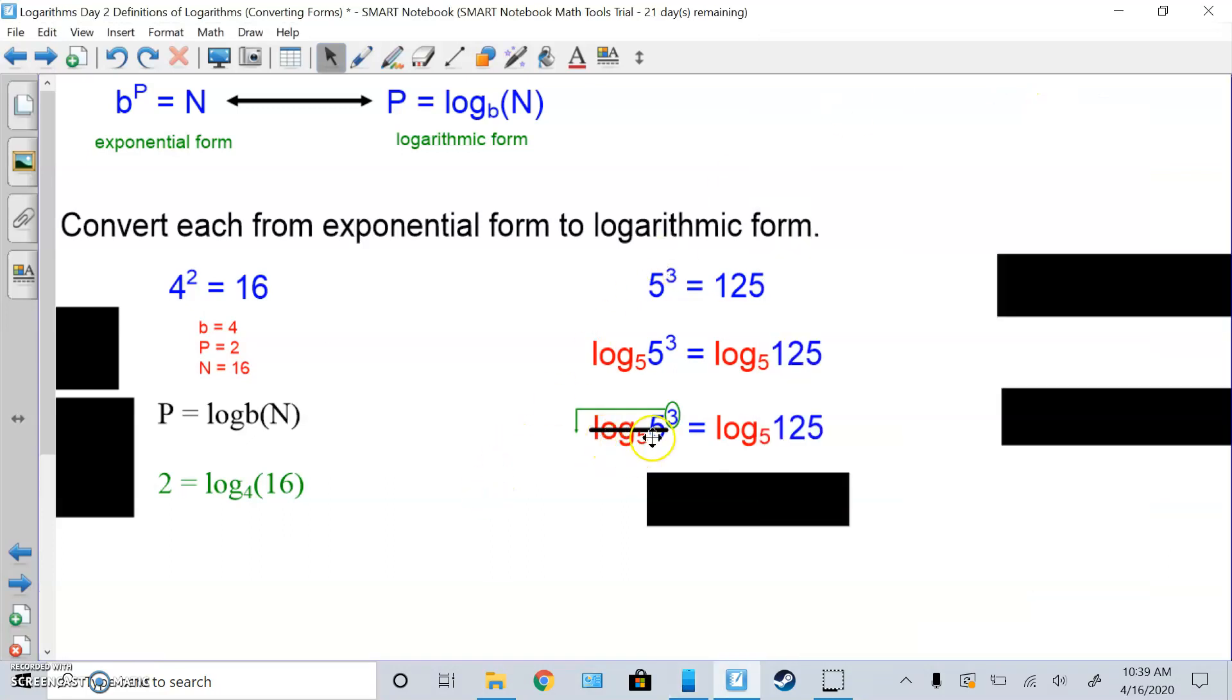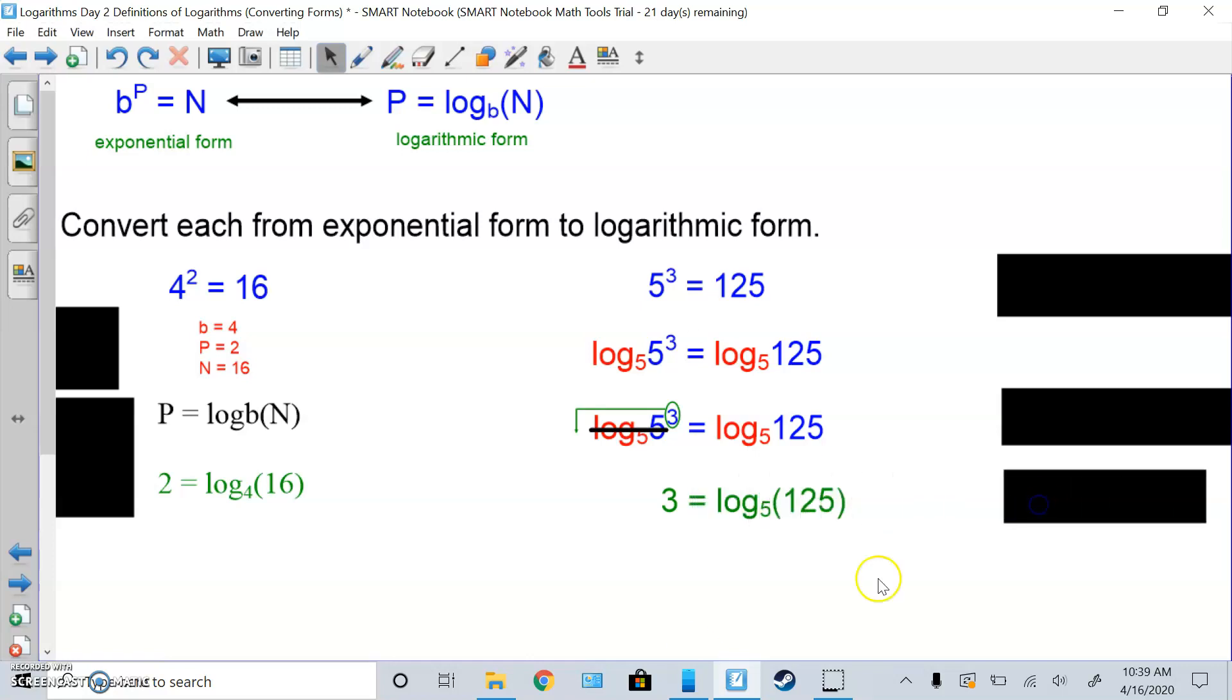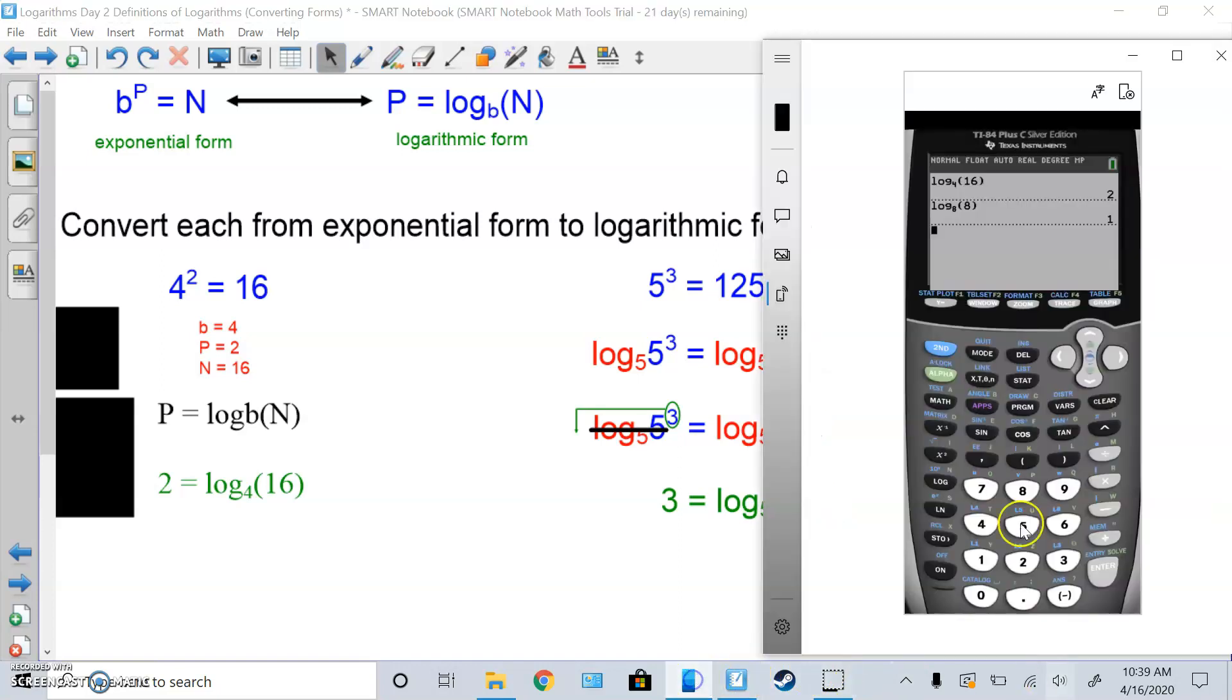So that's why log base 5 of 5 cancel out, and then whatever's left, exponent, just drops down in front. And the right side you leave alone. So my final answer to the left side is just 3, because everything else is cancelled. And the right side stays log base 5 of 125. So let me check that in the calculator. Math, up, up. Log base 5 of 125 should be 3. And that is true, it's 3.